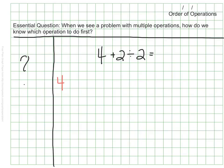Someone might set this up and say, well, the first thing I'm going to do is add 4 plus 2, and they'll say that's 6. And then they'll divide by 2, and I'll get an answer of 3. That's one way someone might approach it.